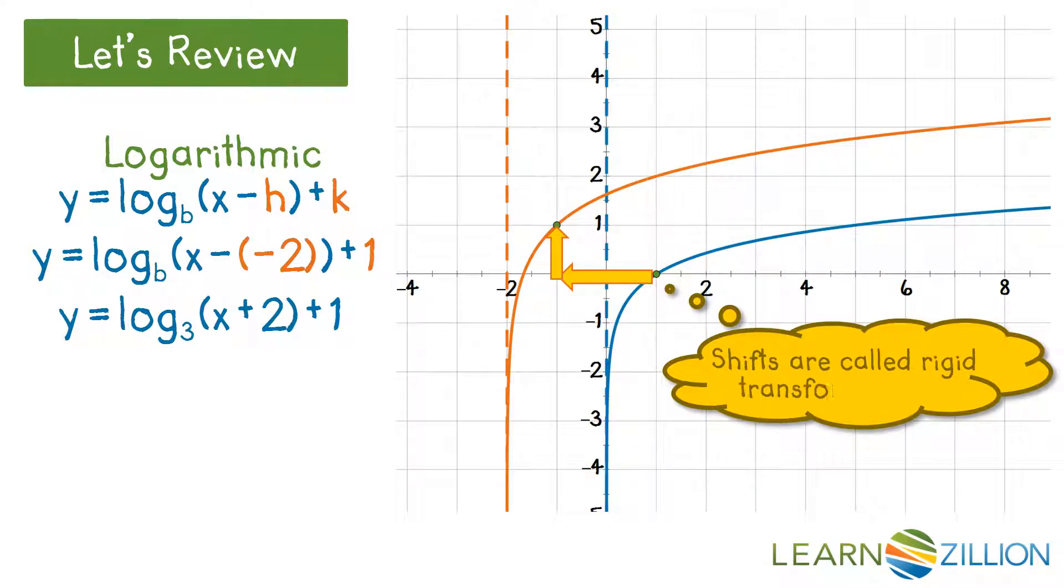Shifts are called rigid transformations because they are rigid like a brick, they shift without changing shape.